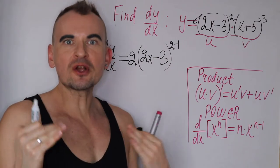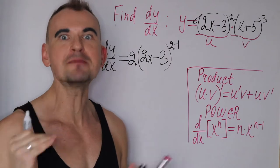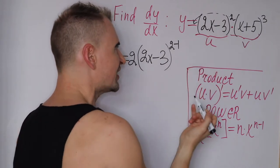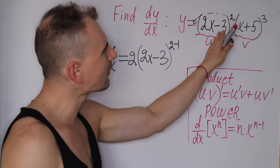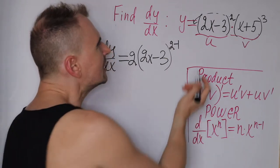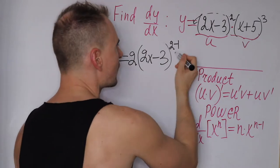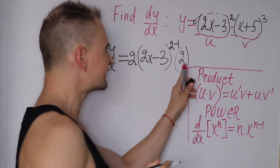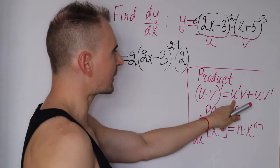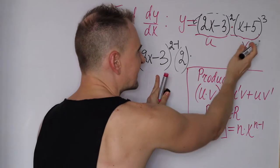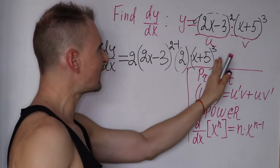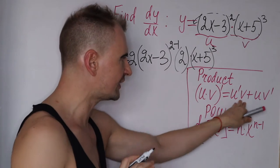The chain rule says the derivative of the outside function gets multiplied by the derivative of the inside function. Your inside function is (2x minus 3), so take its derivative: negative 3 is a constant whose derivative is zero, and the derivative of 2x is just 2. So you're left with 2. This 2 comes from the derivative of the inside function. So u prime gets multiplied by v — the second function as is — giving us times (x plus 5) cubed.